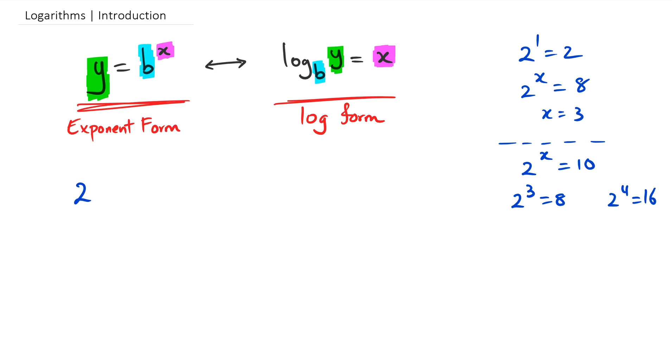If we have 2 to the power of 4 equals 16, in log form we put 4 as the power, the base is 2, and 16 is the answer. So we rewrite this as log base 2 of 16 equals 4, which is the power.